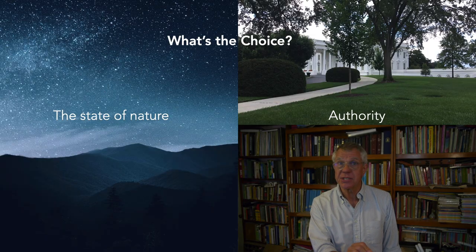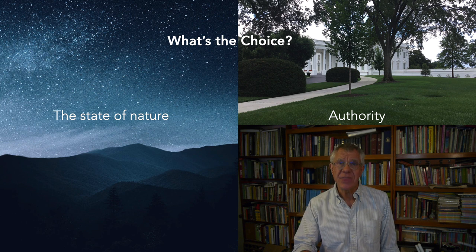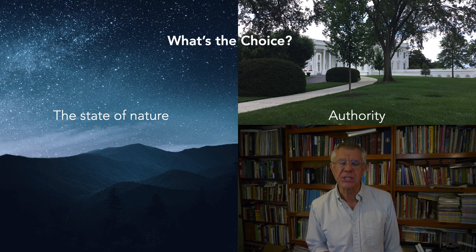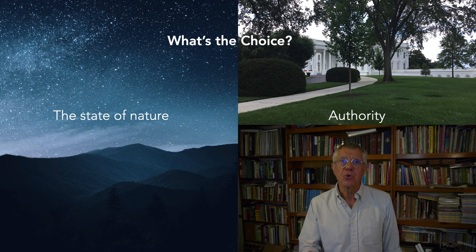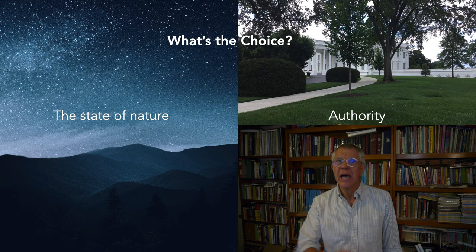The structure of any social contract theory has got to face us with a choice. In the classic case, a choice between a state of government and a state of nature — a state without any political authority altogether. In the purely moral case, we're going to be looking at a state of living under moral norms, granting authority and legitimacy to moral norms, as opposed to living in a state without any moral norms at all.